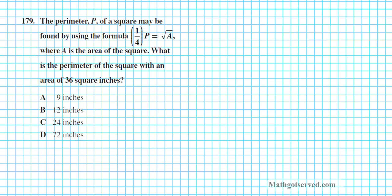Let's take a look at problem 179. It reads: the perimeter P of a square may be found by using the formula one-fourth P equals the square root of A, where A is the area of the square. What is the perimeter of a square with an area of 36 square inches? We are given the area — A equals 36 — and we need to find P. The equation relating area and perimeter is one-fourth P equals the square root of A.